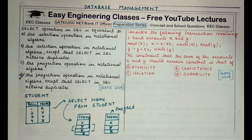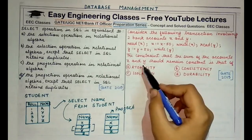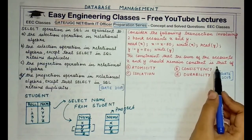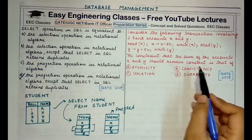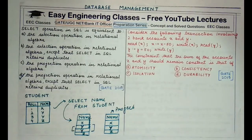Moving to the next question: consider a transaction involving two bank accounts X and Y — read X, X = X − 50, write X, read Y, Y = Y + 50, write Y. The constraint that the sum of accounts X and Y should remain constant is a property of which ACID property: atomicity, consistency, isolation, or durability?